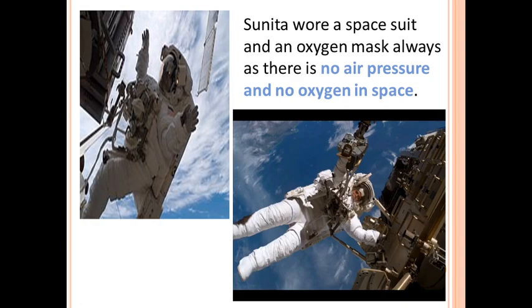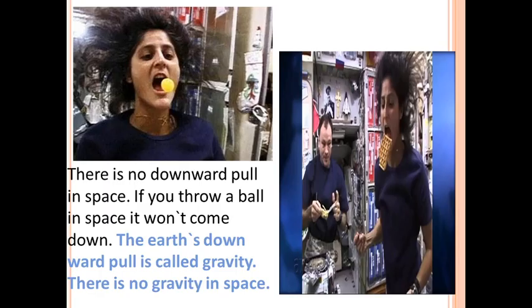Sunita wore a space suit and an oxygen mask always, as there is no air pressure and no oxygen in space. On earth oxygen is present, but in space there is no oxygen, so we have to wear an oxygen mask and a space suit at all times. She was taking space walks — just as we go for walking on earth, she walked in space.